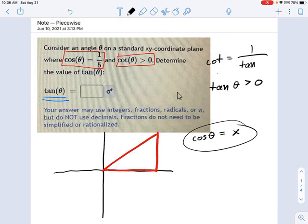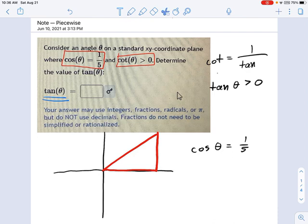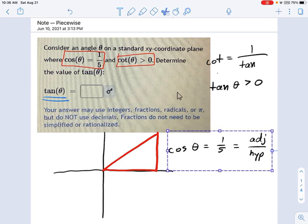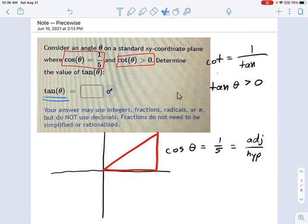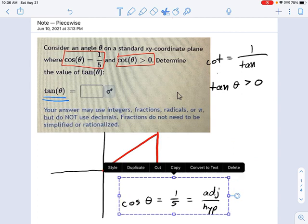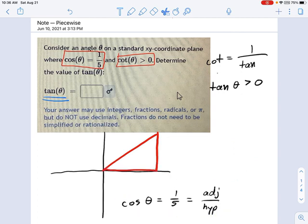Cosine of theta equals 1/5. So what does that mean? Well, if you remember what cosine is, and this is going back to SOHCAHTOA stuff, cosine of theta equals adjacent over hypotenuse. So just bear with me. Adjacent over hypotenuse. So I'm just going to make a statement here. Let's pretend the adjacent is 1 and the hypotenuse is 5. There's theta right there.